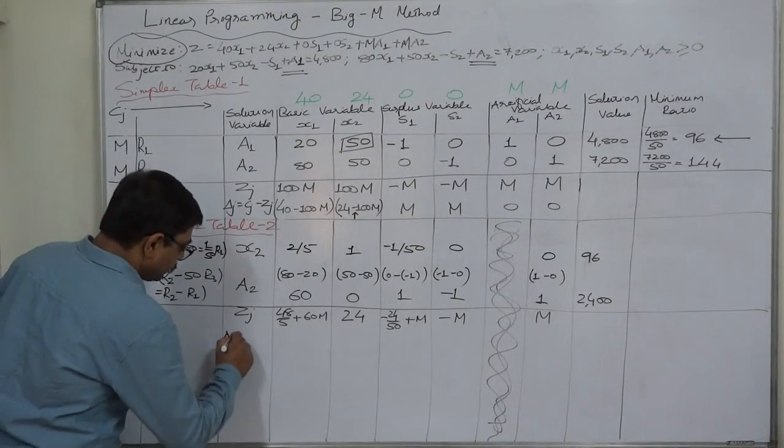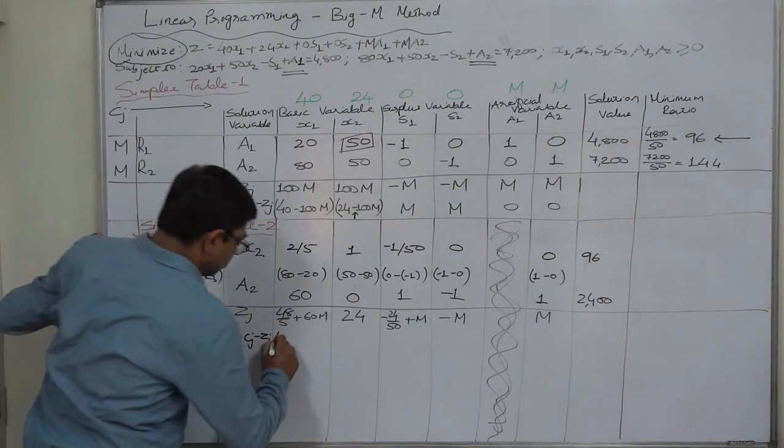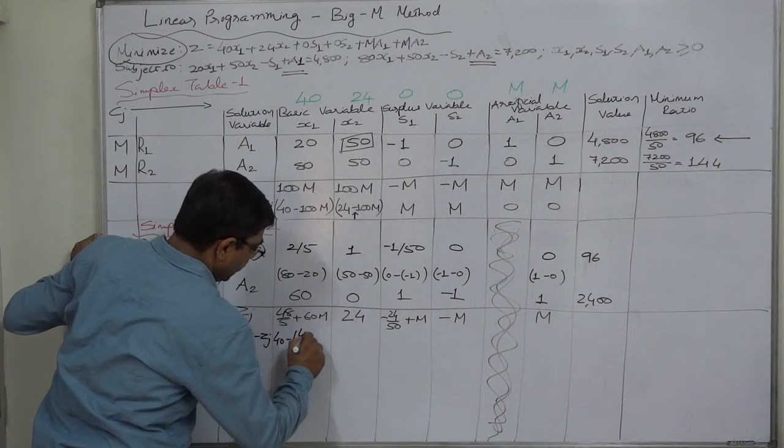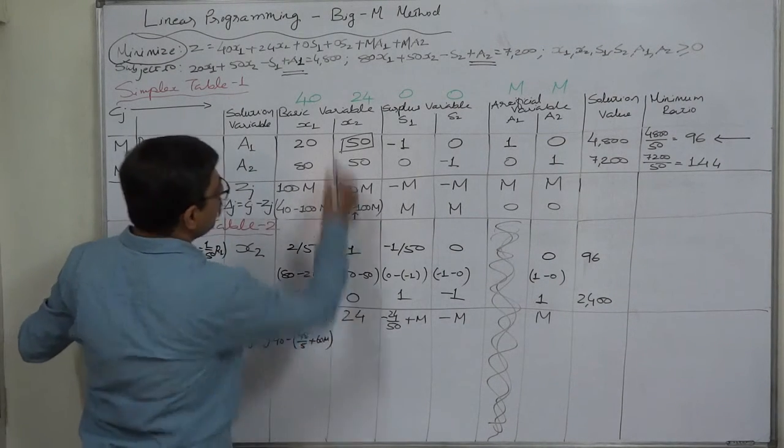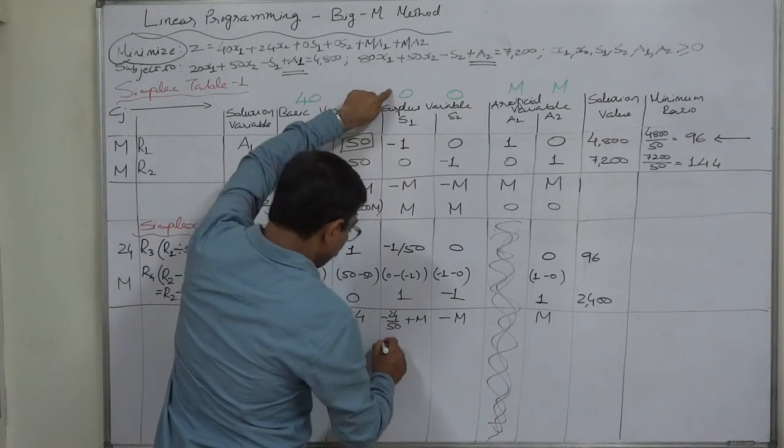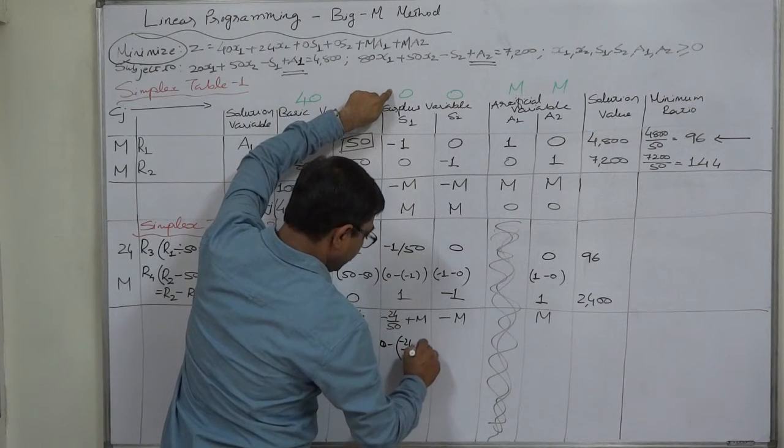Now delta j values: cj minus zj. 40 minus (48/5 plus 60M). 24 minus 24 is 0. 0 minus (minus 24/50 plus M).